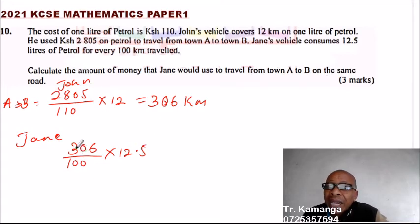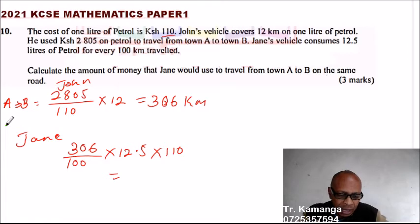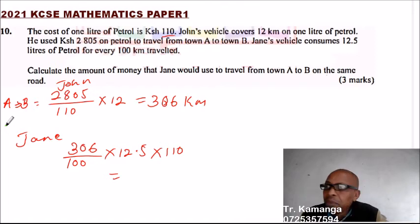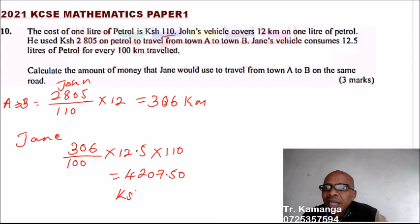You find the number of times 100 would fit into 306, so that you get the liters covered. Then you multiply by the cost of petrol, which we are told is 110. Using your calculator, you find 3.06 multiplied by 12.5, then multiplied by 110. That gives you 4,207.50 Kenyan shillings.